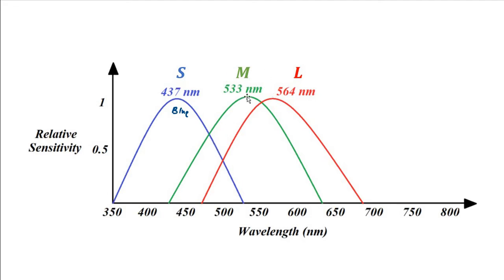The mid wavelength cone is responsible for sensing green color. The long wavelength cone is responsible for sensing red color, and it peaks — maximum sensitivity is at 564 nanometers. So the maximum sensitivity for red color is achieved by the long wavelength cone at a wavelength of 564 nanometers.